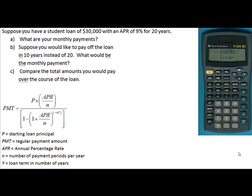Welcome to ScreenCast 4A using the loan payment formula. In the problem that we're going to work now, we are looking at a student loan of $30,000 that has an APR of 9% for 20 years.